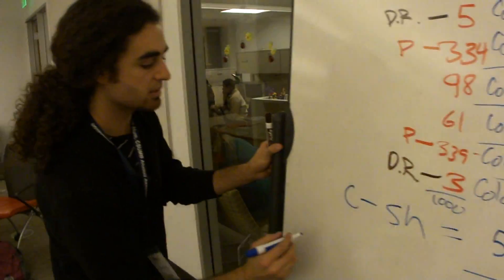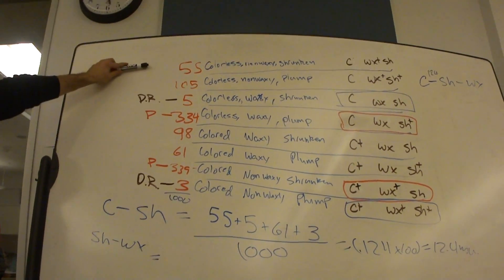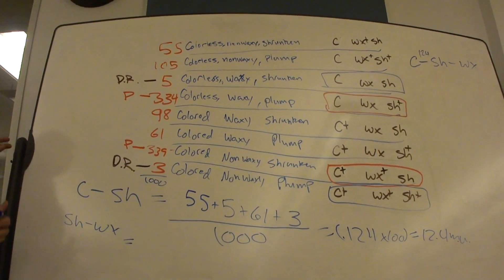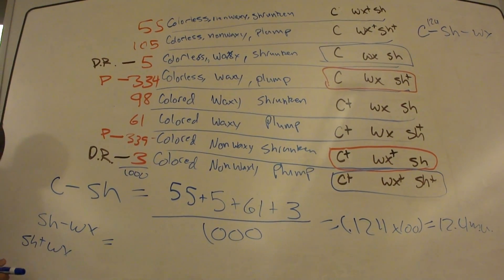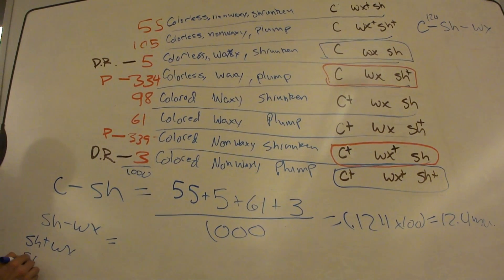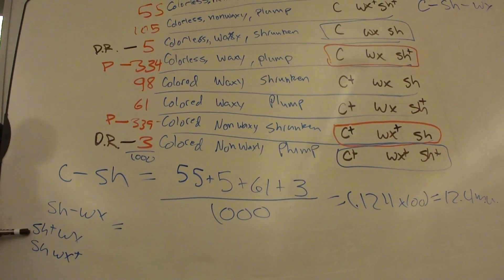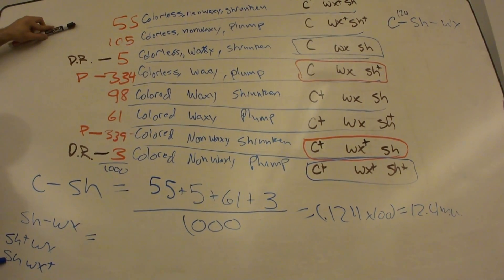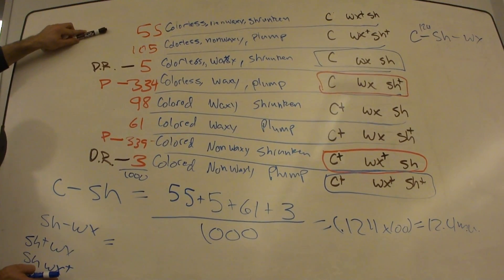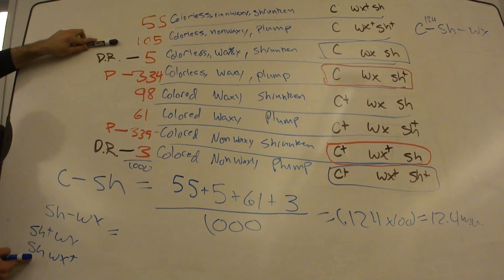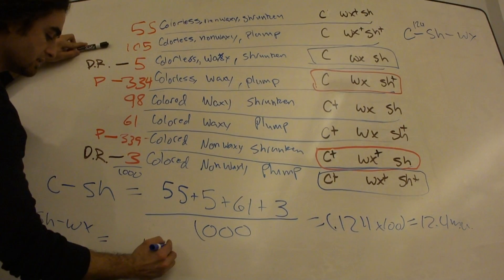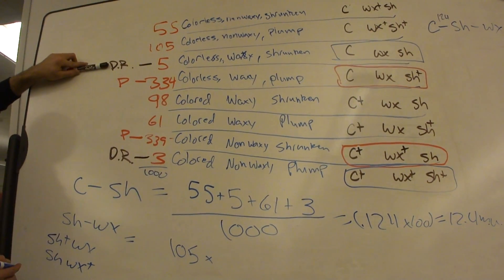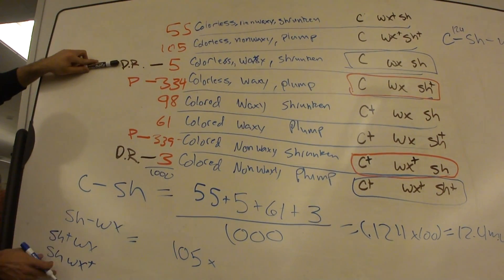Now let's do SH to WX. Okay. Starting back at the top again, considering SH and WX. So, let's write down our parents. We have SH plus, WX, and SH WX plus. So, we're looking at everything that's not those. So, SH WX plus matches this one, so we're not going to add 55. Next one, SH plus WX plus doesn't match either of these, so we're going to add it 105.